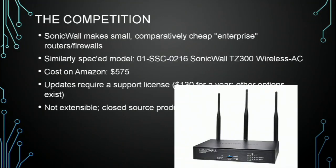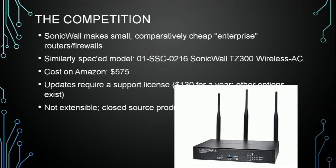It's good to have a console. The competition: this is a SonicWall device that is very similar to that WRT I just showed you, but it's a commercial device meant for entry-level enterprise equipment. This particular one has almost the same specs — it's 802.11ac with removable antennas and a USB port. But it's a lot more expensive: $575 was the price I checked yesterday on Amazon. And if you want updates, you have to have a license, otherwise you don't get updates. It's closed source, so there's nothing you can do about it and nothing you can really add to it. It does have a CLI but it's not well documented.